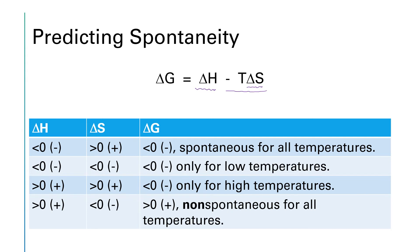Now let's look at delta H being positive. At temperature zero the reaction is not spontaneous since delta G equals delta H. But if delta S is positive, then as T grows, the minus T delta S term eventually overwhelms the positive delta H and flips delta G to negative — so the reaction becomes spontaneous at high temperatures. In the case where delta H is positive and delta S is negative, delta G is positive at all temperatures and the reaction is non-spontaneous at all temperatures.